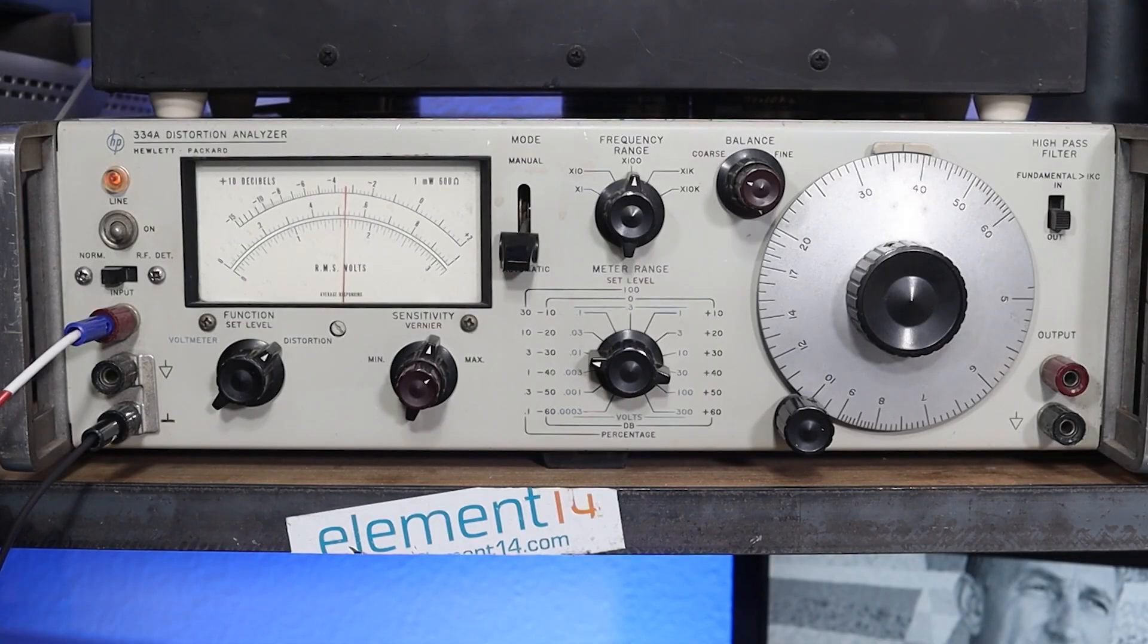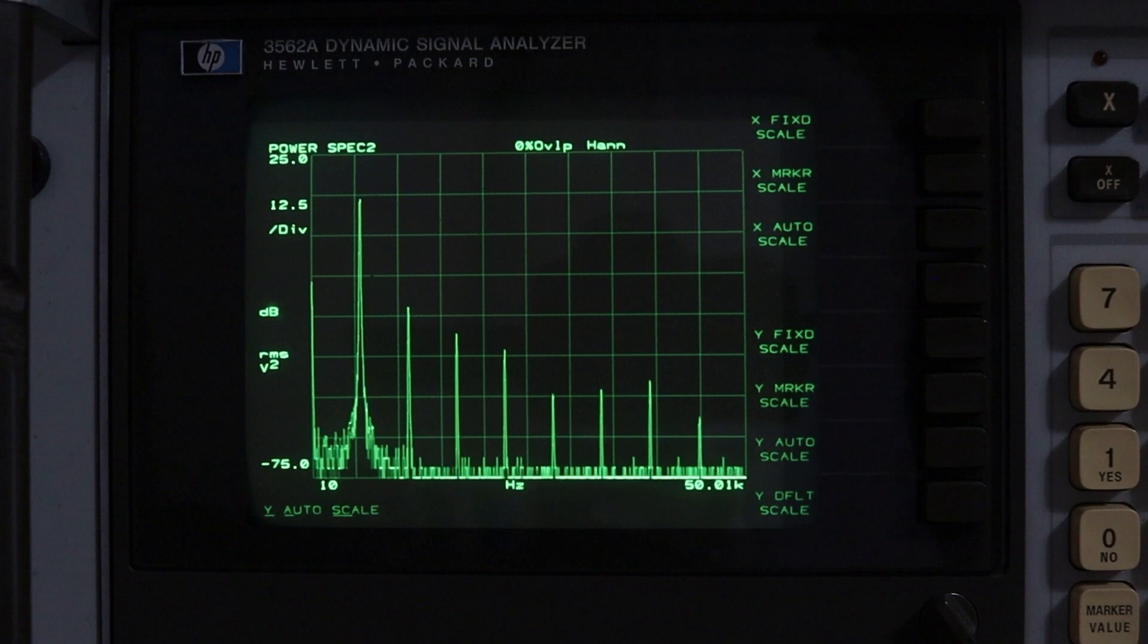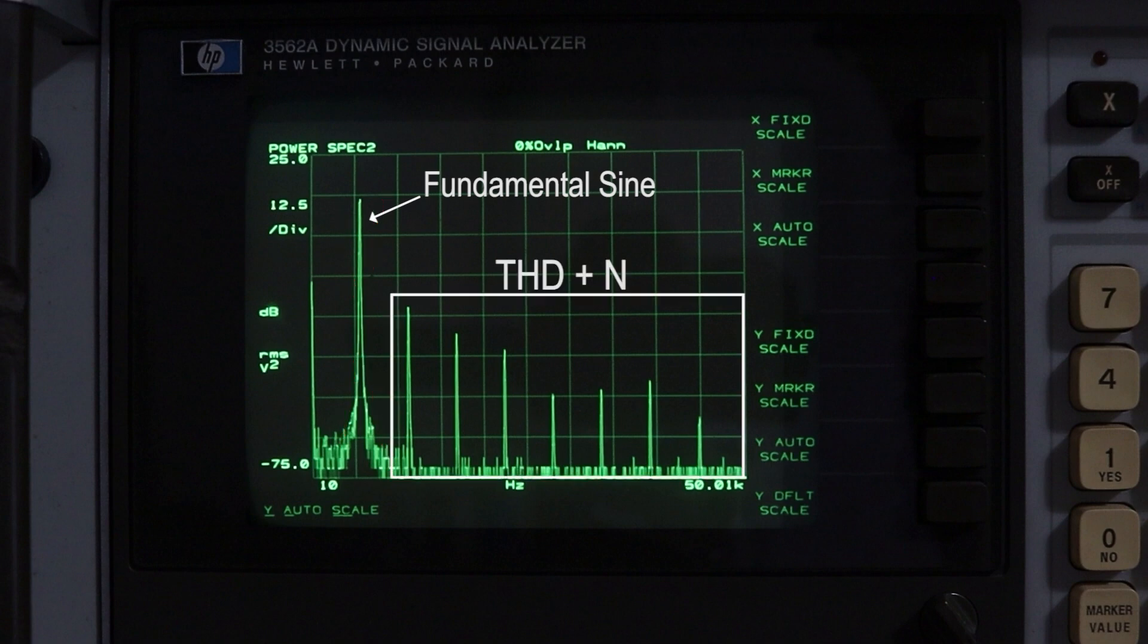Now if we want to measure the purity of a sine wave, we can do so with a distortion analyzer. Ironically, we're going to use the Hewlett-Packard HP334a. In general, it takes a sine wave along with any spectral impurities, removes the fundamental signal, and measures any harmonics and noise, summing everything together and spitting it out as a single reading on a single gauge. The result is called THD or Total Harmonic Distortion.